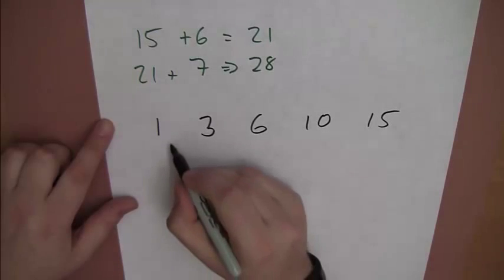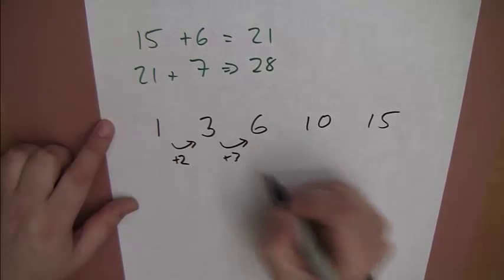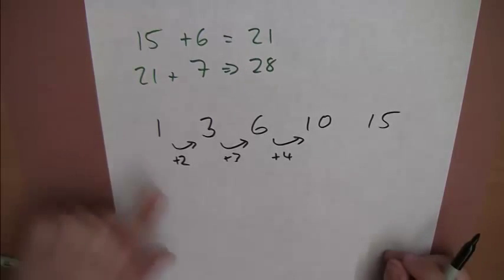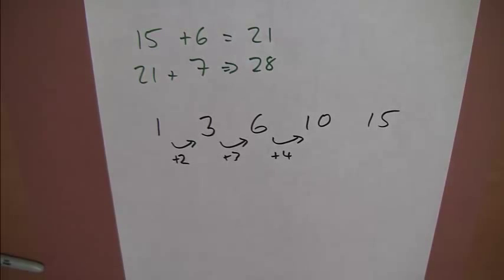you've got to think to yourself, well, what's the sequence going up in? It's plus 2, plus 3. And you need to remember that if it's going up by 1 each time, particularly in order like that, then it's the triangle numbers. So, let's pause. Thank you.